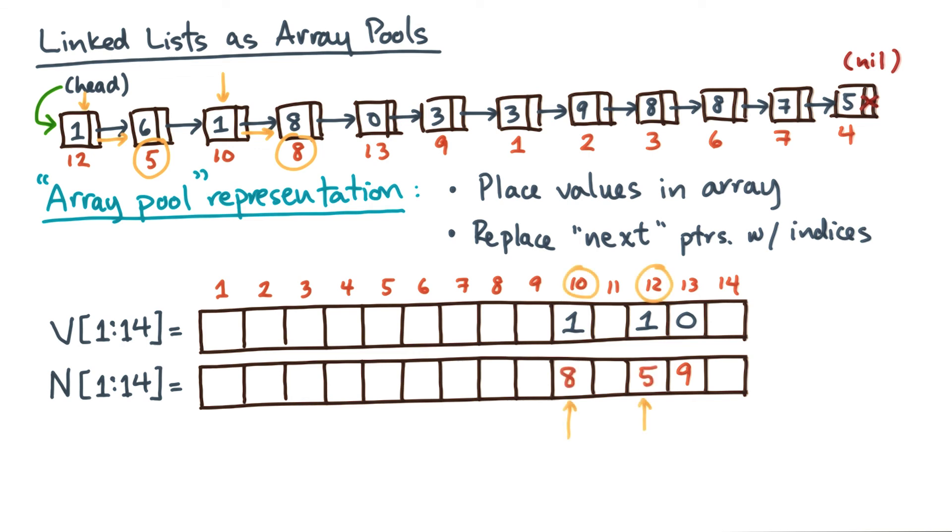This array pool representation is critical, because it gives us a way to have multiple entry points into the list. To do a list ranking, you still have to walk the list somehow. But at least we'll be able to do things like data parallel operations, because we basically stored everything as arrays.